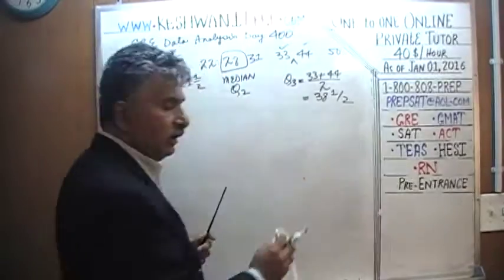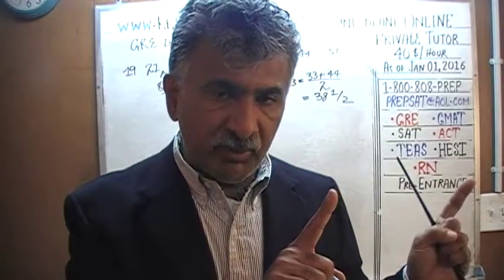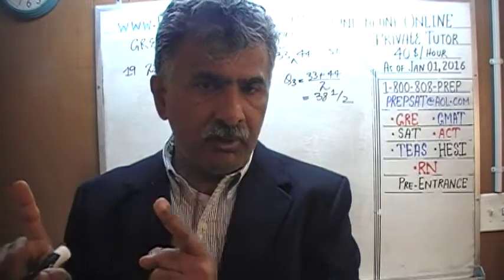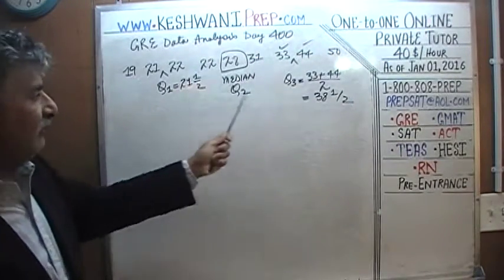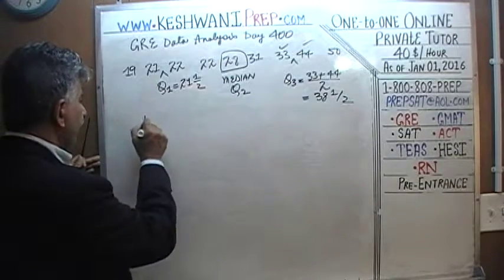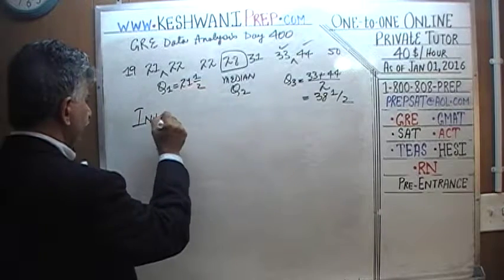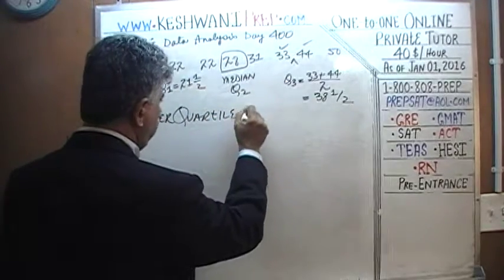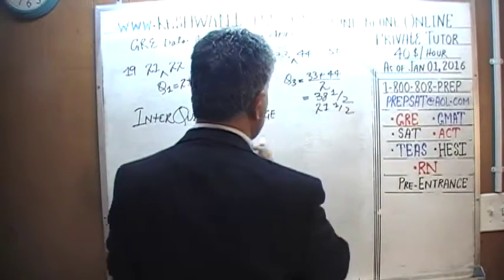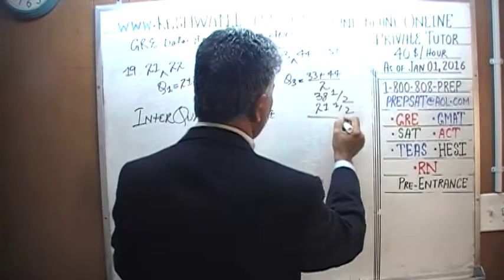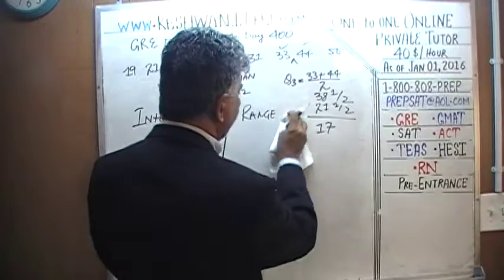We have our quartiles. The interquartile range represents the range of the middle 50% of the population — we ignore the bottom 25% and the top 25%. IQR = 38.5 minus 21.5. The halves cancel out, 38 minus 21 is 17. The interquartile range is 17.